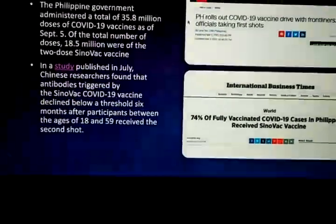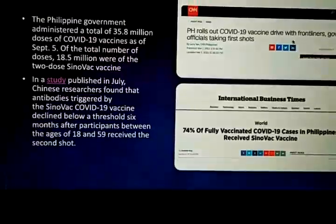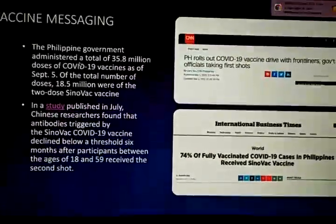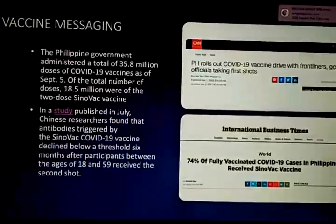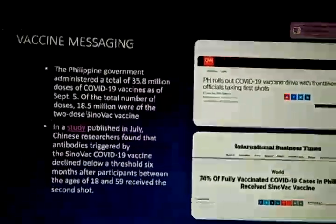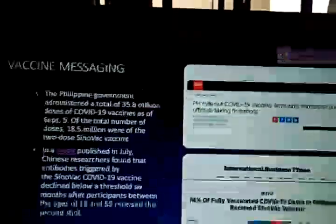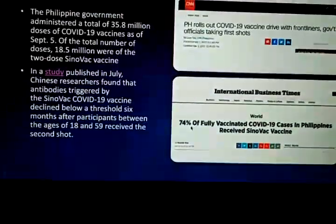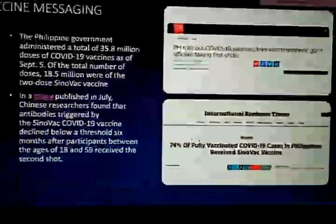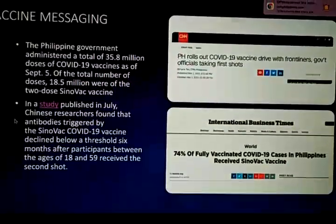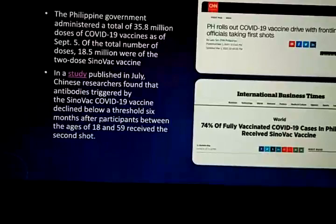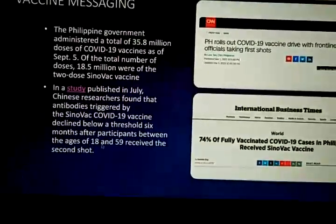On vaccine messaging: the Philippines rolled out its COVID-19 vaccine drive with frontliners and government officials taking the first shots. The Philippine government administered a total of 35.8 million doses as of September 5. Of these, 18.5 million were doses of the two-dose Sinovac vaccine, with 74% of fully vaccinated individuals having received Sinovac. However, a study published in July found that antibodies triggered by the Sinovac vaccine declined below a threshold six months after the second shot for participants aged 18 to 59.